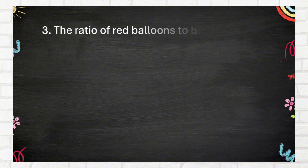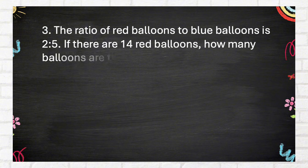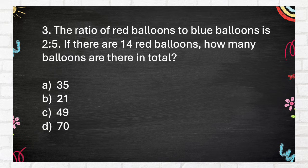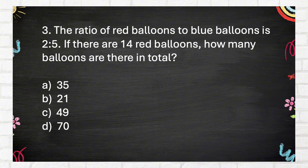Number 3. The ratio of red balloons to blue balloons is 2 to 5. If there are 14 red balloons, how many balloons are there in total? A. 35. B. 21. C. 49. D. 70.